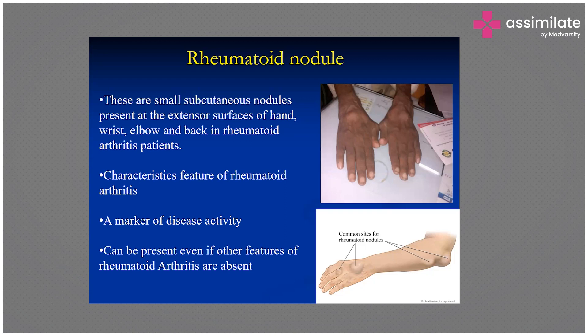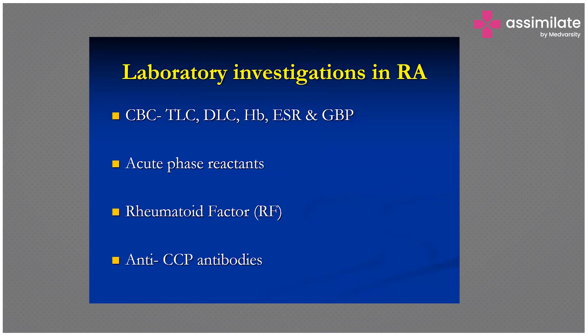Especially in old-age people we see rheumatoid nodules. These are basically firm lumps, seen in about 20% of cases. They are non-painful subcutaneous nodules, mainly found on the extensor surfaces of the hand. It is a characteristic feature of rheumatoid arthritis and a marker of disease activity, and can be present even if other features of rheumatoid arthritis are absent.